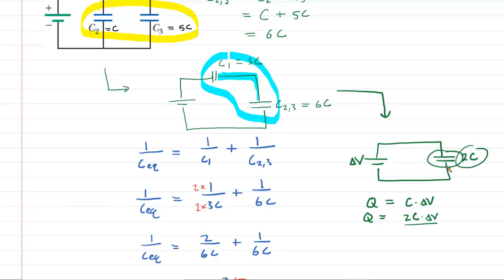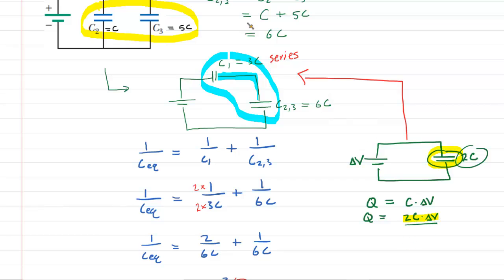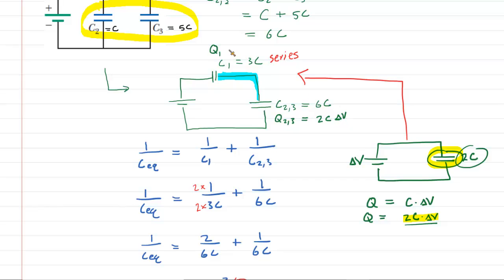Now we're going to work our way backwards through the circuit. When we go from the simplified picture back to two capacitors in series, we carry the charge value with us. The charge we obtained — 2C·delta V — is also the charge on each of those capacitors. So the charge on C2,3 equals 2C·delta V, and the charge on C1 also equals 2C·delta V.